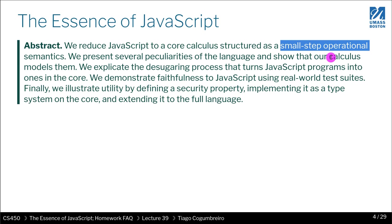Small step operational semantics just does the minimum amount you can possibly do. Imagine if instead of recursively, you were implementing it in a loop where at each iteration you would make the expression smaller and smaller by executing it. Small step operational semantics just tries to do what is inside the loop — the smallest thing you can do at each iteration. For instance, in function application you would just perform the substitution but you wouldn't execute the body of the function — you would leave that to the next step.